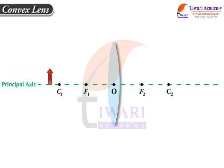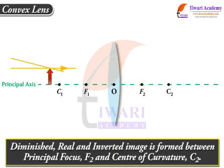A diminished, real and inverted image is formed between principal focus F2 and centre of curvature C2 at the opposite side, when an object is placed beyond C1 of a convex lens.